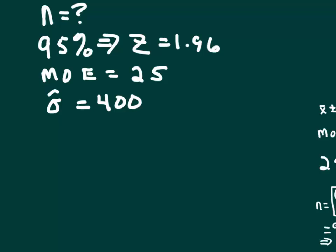Okay, in this problem, the question asks you to find the sample size, how large of a sample should you take. It gives you that you want a 95% confidence interval, and so with 95% confidence, that means z is going to equal 1.96.